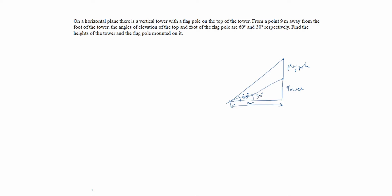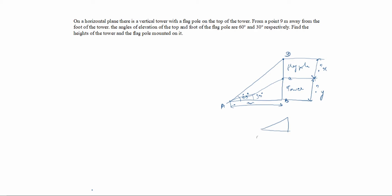We label points A, B, C, and D. We need to find the height of the tower and the flagpole mounted on it. The height of the tower is what we need to calculate. We take the flagpole height as x and the tower height as y. First we will consider triangle ABC, where angle is 30° and the base is 9 meters.